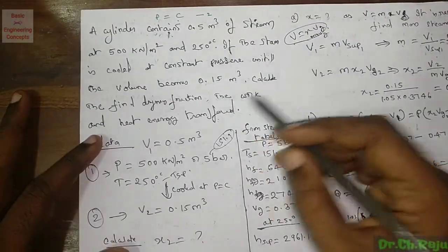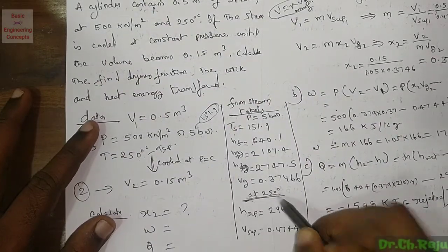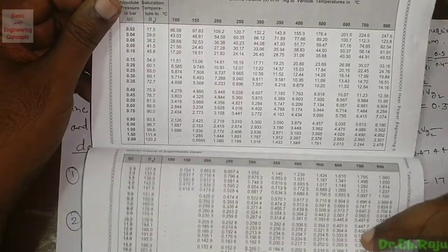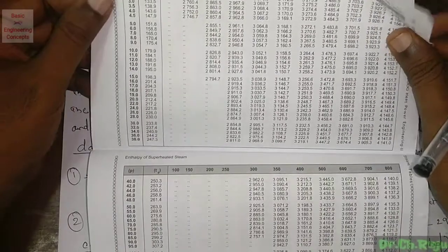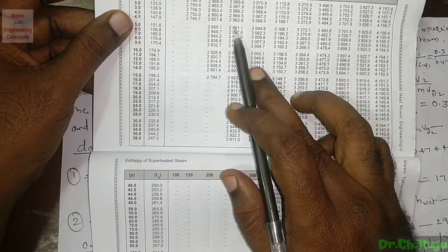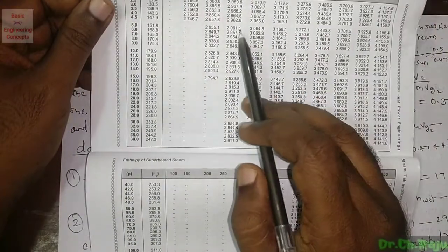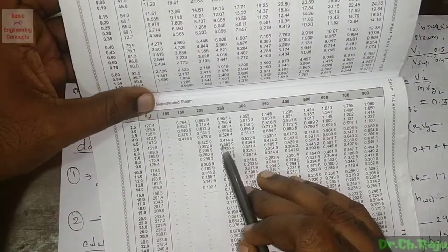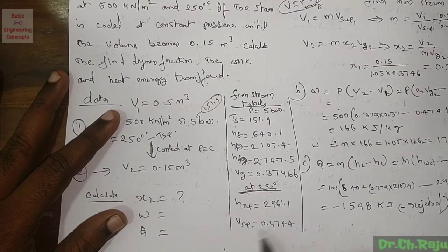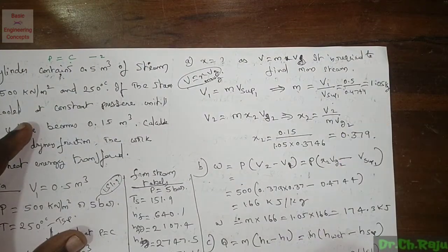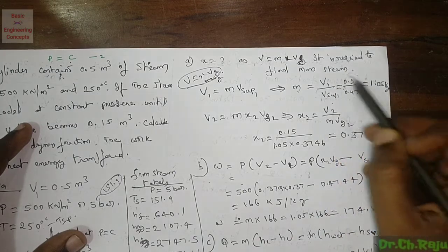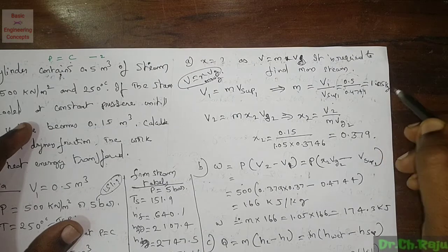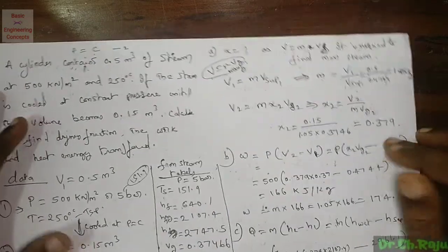Substituting: m = 0.5 / 0.4744 = 1.054 kg. So the mass of steam is approximately 1.05 kg.